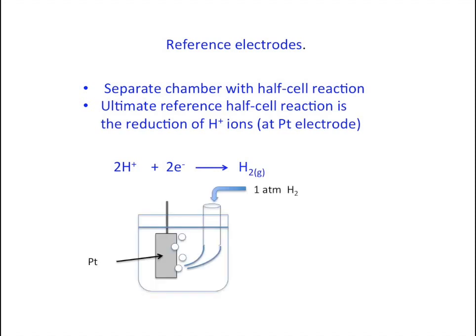It's the reduction of hydrogen ions to hydrogen gas at a platinum electrode. Physically, this means we bubble hydrogen gas at one atmosphere across a platinum plate in an acid solution. Here's the Nernst equation that represents the potential that builds up at that electrode. Since we can't measure the potential of a single electrode, this is merely assigned zero volts by definition.